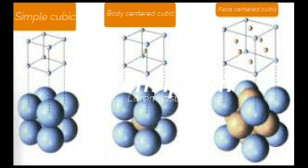In the third type, the face-centered cubic, atoms are at the corners. In addition to that, atoms are at the center of each face — each face center has one atom. Due to this, the atoms at the corners will separate further. So at the corner there are 8 atoms, and at the center of each face there is one atom.